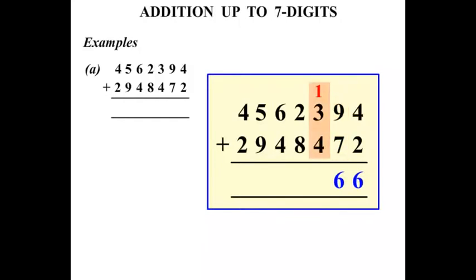1 plus 3 is 4 plus another 4 is 8. 2 plus 8 is 10. So to write 10 we put the 0 down and carry the 1. 1 plus 6 is 7 and 4 more is 11. So to write the 11 put the 1 down and carry the 1.